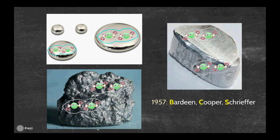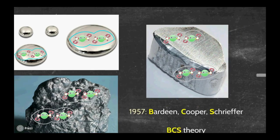In 1957, Bardeen, Cooper and Schrieffer formulated the BCS theory to explain superconductivity. To see how it works, we get inside a superconductor.